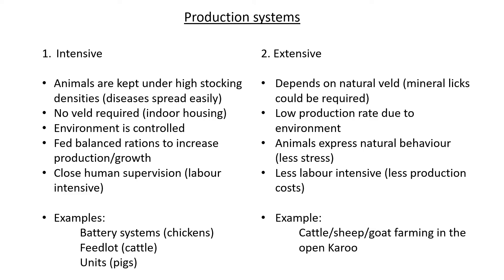This does not happen as quickly in an extensive production system. Secondly, no veld is required for intensive — if you don't have space or veld available, you can use indoor housing. You don't need a lot of land, but you do need a large indoor space depending on the number of animals. Thirdly, the environment is controlled — temperature, feed, and water are all managed. Fourthly, animals are fed balanced rations to increase their production or growth.